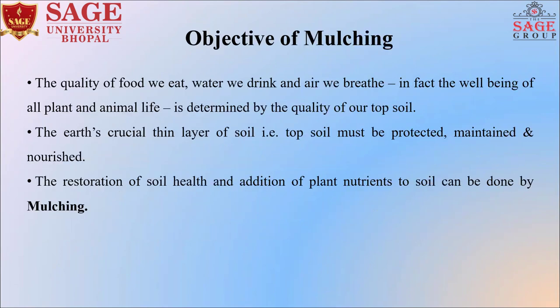Objective of mulching: The quality of food we eat, water we drink, and air we breathe — in fact, the well-being of all plant and animal life — is determined by the quality of our topsoils. The earth's crucial thin layer of soil, that is topsoil, must be protected, maintained, and nourished. The restoration of soil health and addition of plant nutrients to soil can be done by mulching.